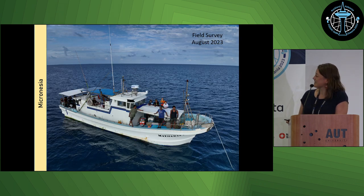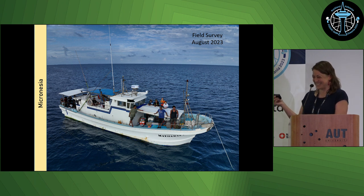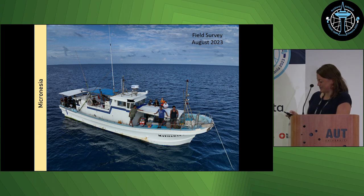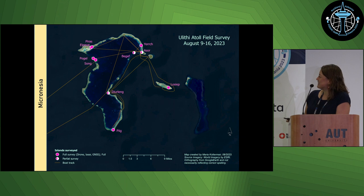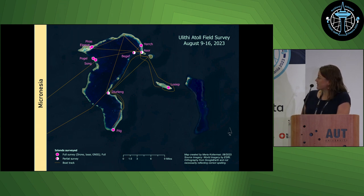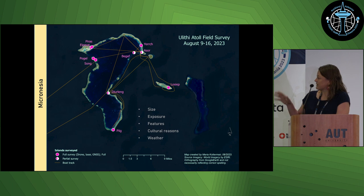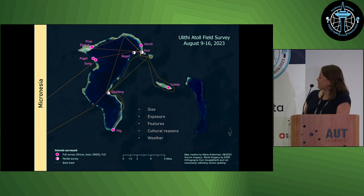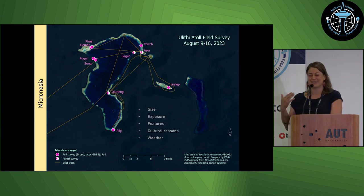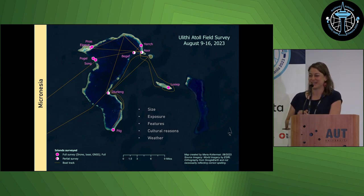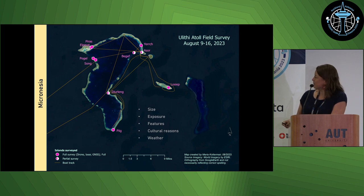For the field work, we went on a little fishing boat — about a 12-hour ride to the atoll. Here's the atoll and the islands we surveyed; they were all uninhabited, smaller islands. Over just over a week, we surveyed 10 islands, selecting them based on size, exposure, available features, and also cultural reasons. For example, we wanted to survey one island, but just a week before we were going there, we were told there was a taboo — somebody had died and nobody could access the island for a while — so cultural considerations prevented us from surveying certain islands.